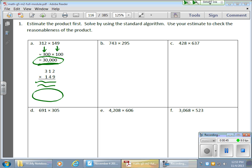I'm going to take 312, I'm going to round it to 300. I'm going to take 149, I'm going to round it to 100. I'm going to multiply those first, and I get an answer of about 30,000, so my exact product should be somewhere in the ballpark of 30,000.